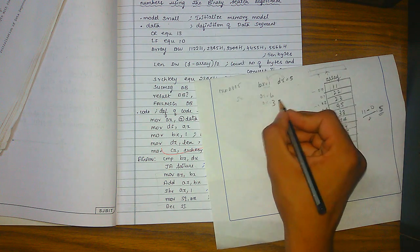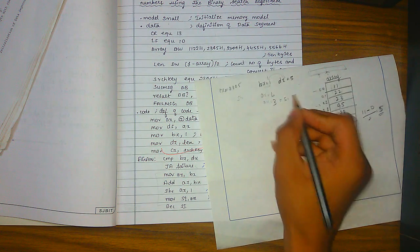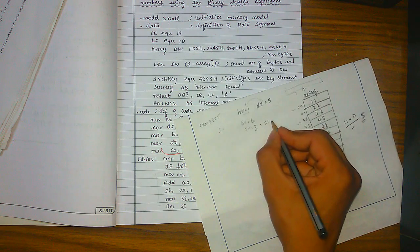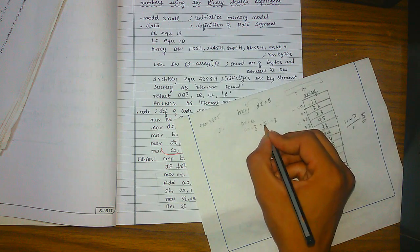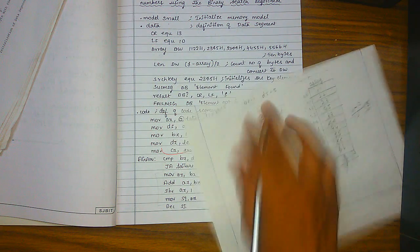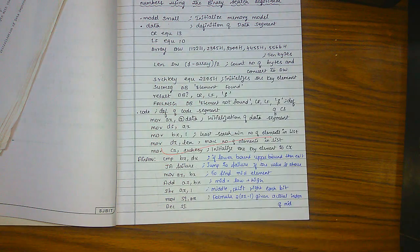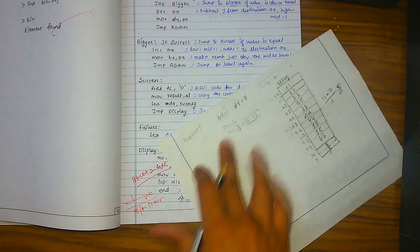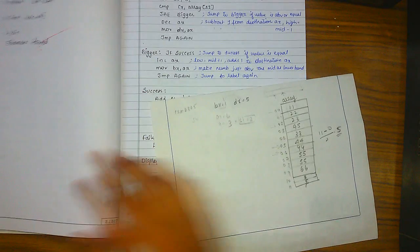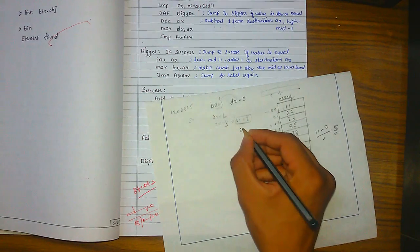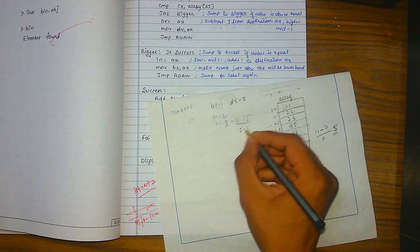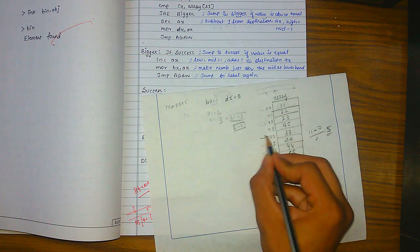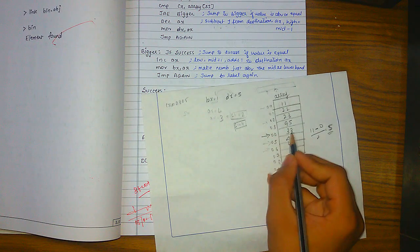We do mov SI, ax — SI gets the value 3. Then decrement SI, so SI becomes 2. Then add SI, SI — SI becomes 4. This means array[4], which points to the middle element.